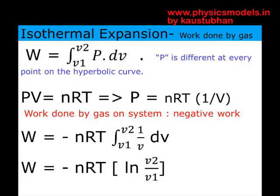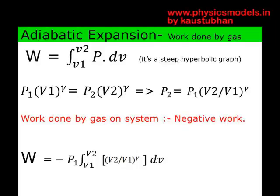Because nRT is constant, it comes out of the integral with a minus sign — the minus is because the gas is doing work by pushing the piston. So the work done in an isothermal expansion is W = -nRT·ln(V2/V1), as per the formula for the integral of (1/V)·dV. This is straightforward to calculate, and you'll be able to solve any question on isothermal expansion.